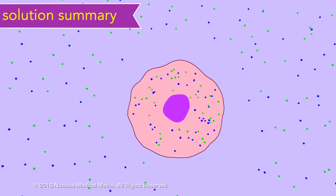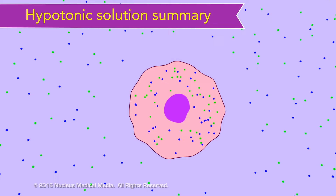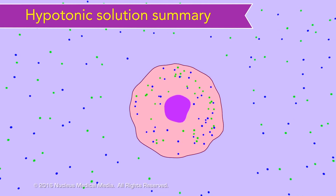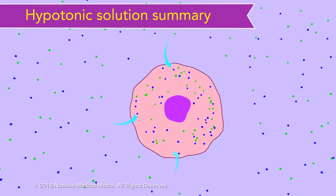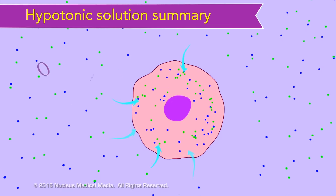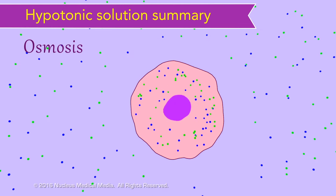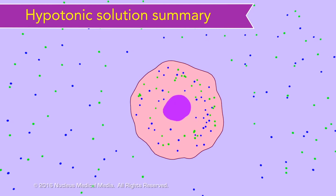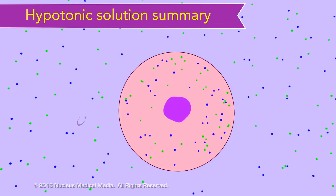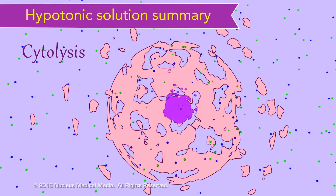In a hypotonic solution, there is a lower concentration of solute outside the cell compared to inside the cell. This causes water molecules to diffuse into the cell — remember, when diffusion happens with water, we call that osmosis. This causes the cell to swell, and if the concentration difference is high enough, cytolysis may occur.